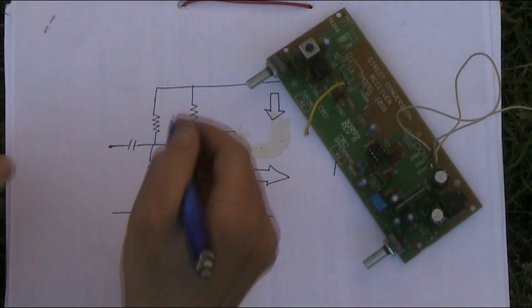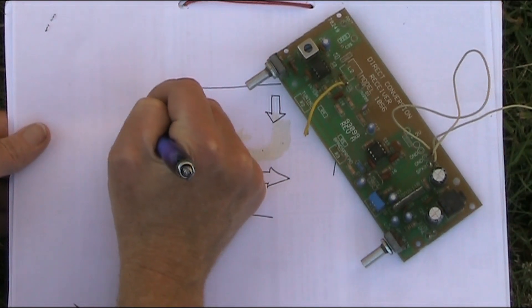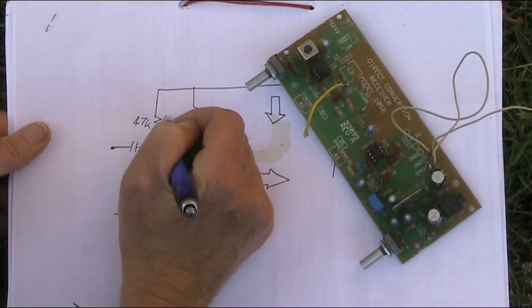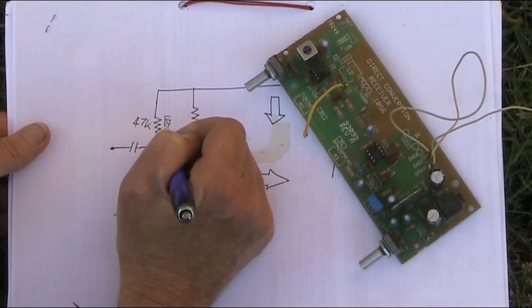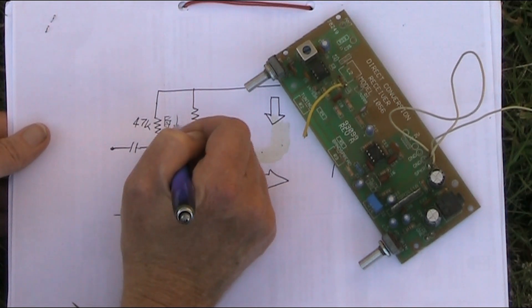For example, if this resistor up here is 47k, it might be yellow, violet, orange, and then whatever your tolerance band is. You're reading it that way.